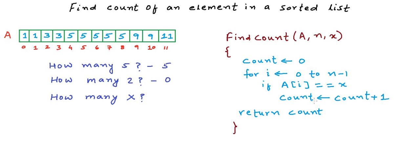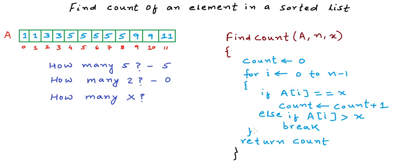We could optimize this slightly because the array is sorted — once a[i] becomes greater than x, we can stop counting. But still in the worst case, this loop will run n times. When all elements in the array are the same, this loop runs n times. So in the worst case, the time complexity is O(n).